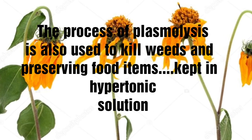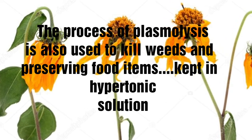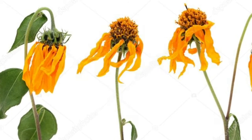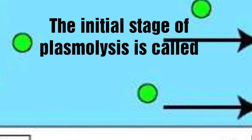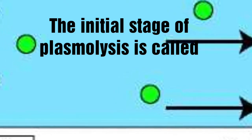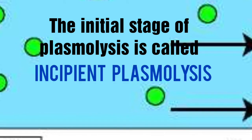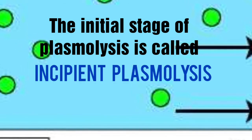The process of plasmolysis is also used to kill weeds and for preserving food items kept in hypertonic solution, like pickles, jams, and squash. The initial stage of plasmolysis is called incipient plasmolysis.